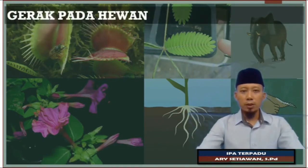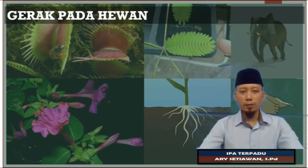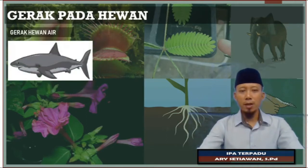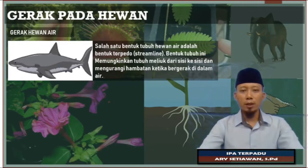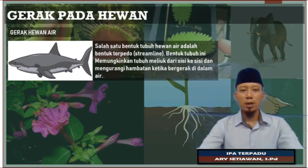Yang pertama yang akan Ustadz jelaskan adalah terkait mengenai gerak pada hewan, di mana gerak pada hewan ini terfokus kepada gerak pada hewan di air, di udara, dan juga di darat. Yang pertama adalah gerak hewan di air, misalkan pada ikan. Ini biasa disebut dengan hewan akuatik. Kalau kita perhatikan, tubuh hewan-hewan akuatik atau ikan itu berbentuk torpedo, atau biasa disebut dengan streamline.